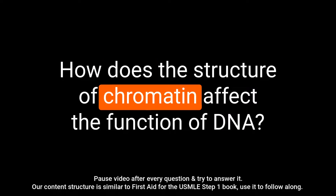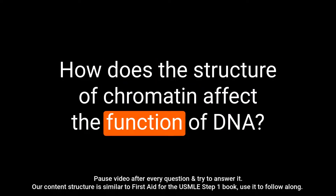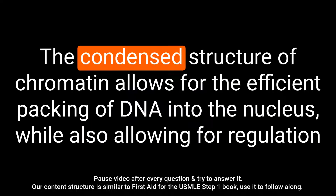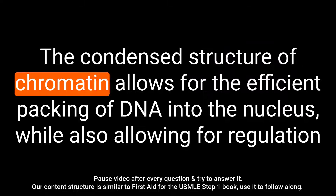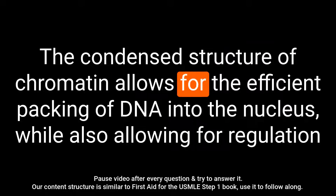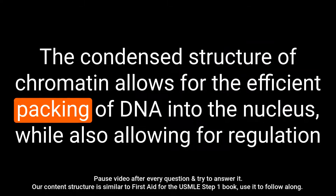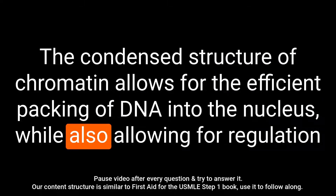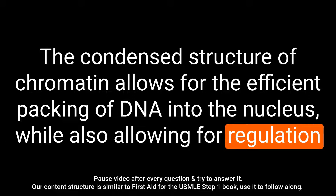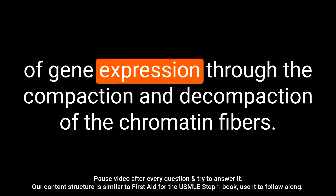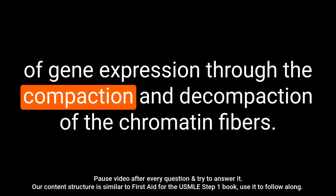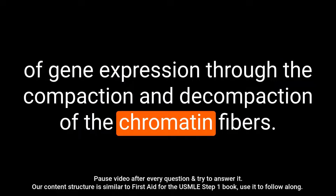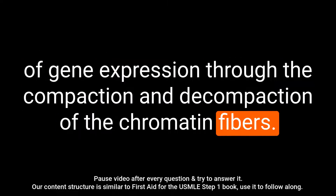Question: How does the structure of chromatin affect the function of DNA? Answer: The condensed structure of chromatin allows for the efficient packing of DNA into the nucleus, while also allowing for regulation of gene expression through the compaction and decompaction of the chromatin fibers.